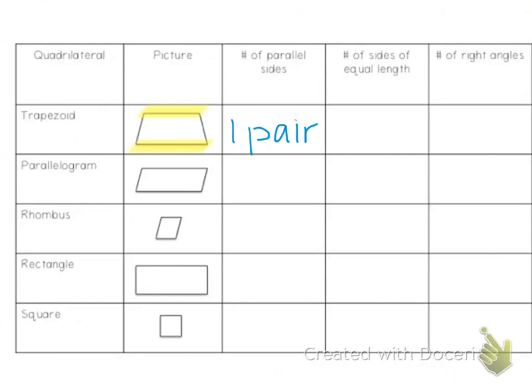In this picture, the left and the right sides are equal length, so we can say it has one pair of sides of equal length. But it doesn't always have a pair of sides of equal length — it just depends on what the trapezoid looks like. A trapezoid has zero right angles, so we have acute angles and obtuse angles.